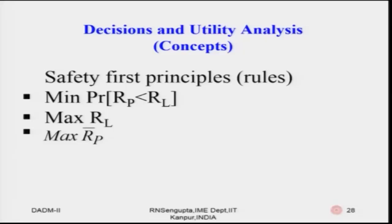For example, say I win 1000 rupees and also lose 1000 rupees. My main concern is not to make the decision based on the positive returns, but to find out what my decision should be based on having lost 1000 rupees — meaning I am only looking at the negative returns. Mathematically, the safety first rules are: (1) minimize the probability that Rp is less than Rl, (2) maximize Rl, and (3) maximize the average value R̄p.